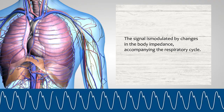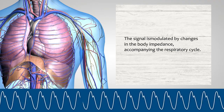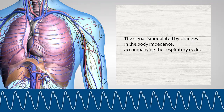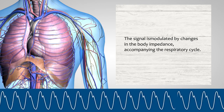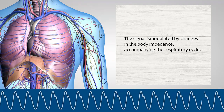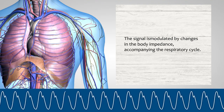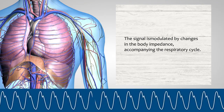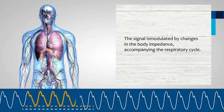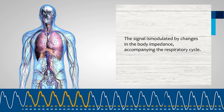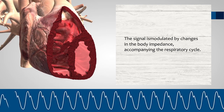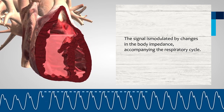The technique avoids encumbering the subject with masks, tubes, flow meters or spirometers, does not impede respiration and has minimal effect on the psychological state of the subject. The impedance method for measuring respiration rate consists in passing a high frequency current through the appropriately placed electrodes on the surface of the body, and detecting the modulated signal. The signal is modulated by changes in body impedance accompanying the respiratory cycle.